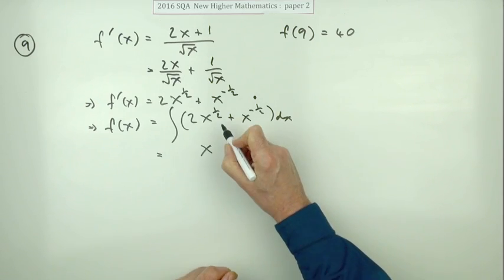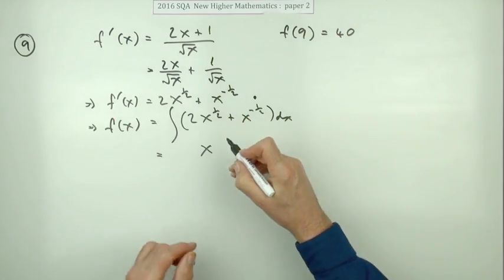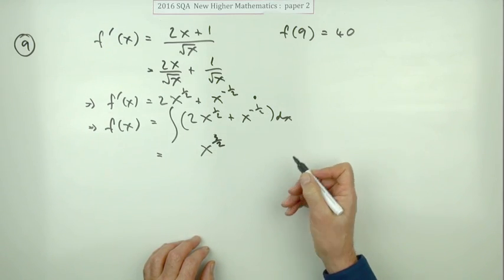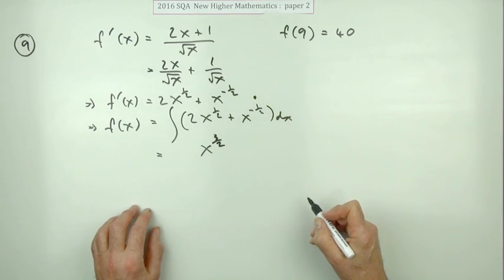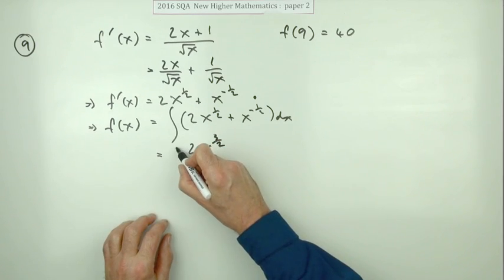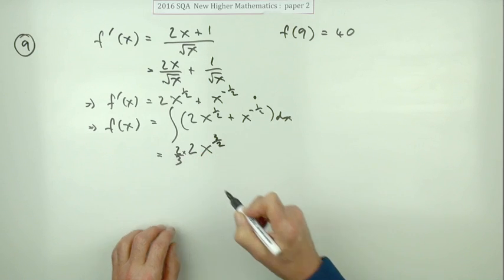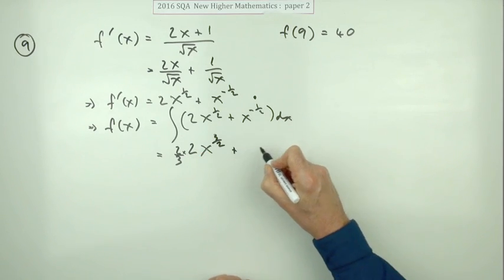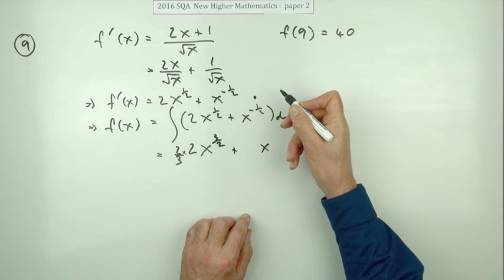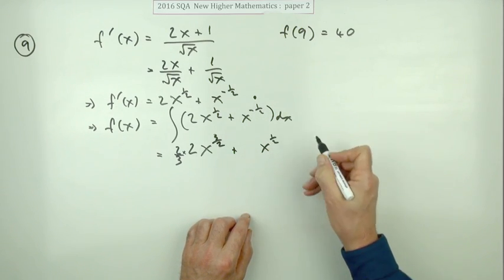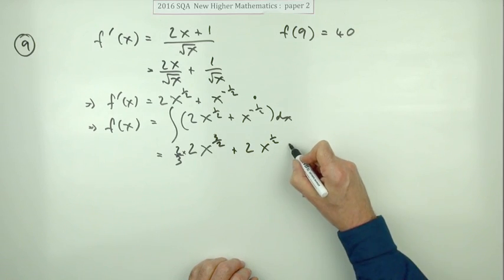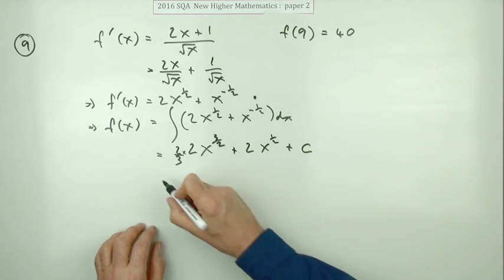So this term here, add one to the power integrating, lift it up. One on to a half is one and a half, that's three upon two. But divide by that - I think what I'll do is instead of dividing by three upon two, I'll multiply by the reciprocal which is two upon three. This one here, add one to the power - negative a half plus one goes through zero up to a half. Divide by a half means multiply by the reciprocal which is two.